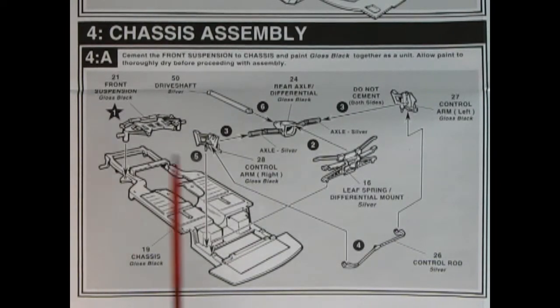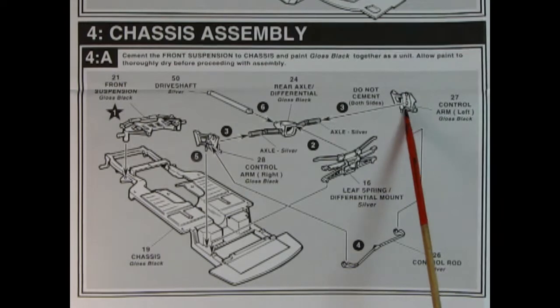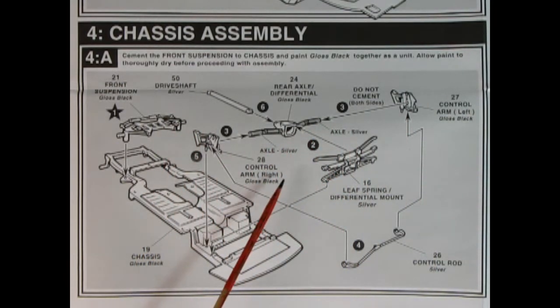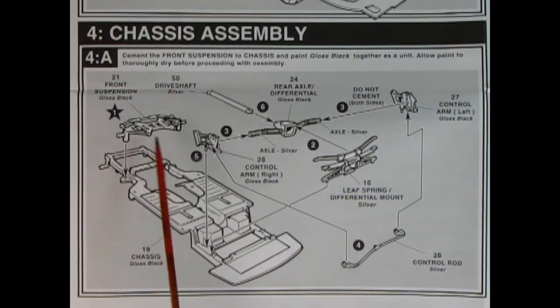Panel 4 is our chassis assembly. Here you can see the chassis pan. And then we've got our control arms left and right going into our rear axle with the drive shaft and the leaf spring mount. And then we've got our control rod in the back and our front suspension with the rack and pinion steering up front. Hey, if I sound a little crazy, it's because today I'm off the leash.